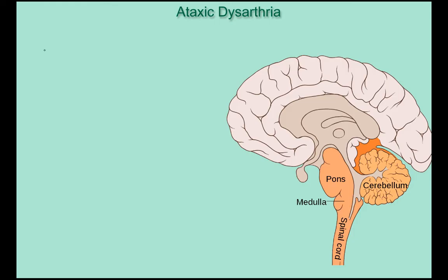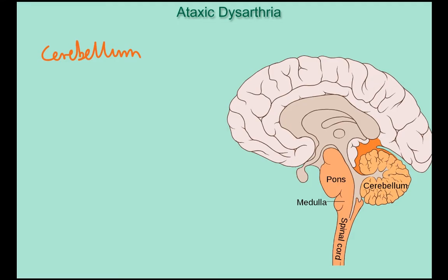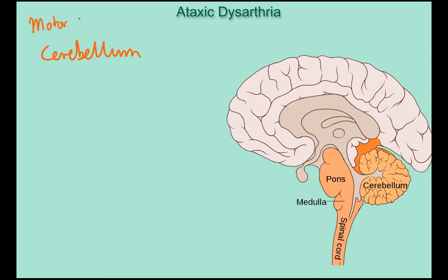Ataxic dysarthria is caused by damage to the cerebellum. The cerebellum's job is to help time and coordinate movements — not just speech movements, but all movements. Essentially what the cerebellum does is take input from the motor plan, and it also takes input from sensation — what's actually happening in the body — and it combines both of those, trying to make them match by adjusting movements.